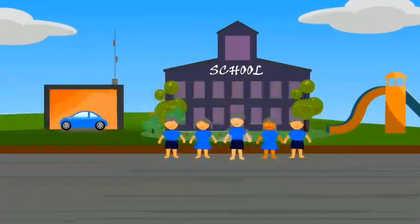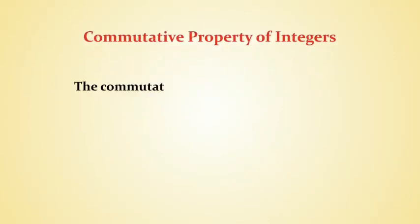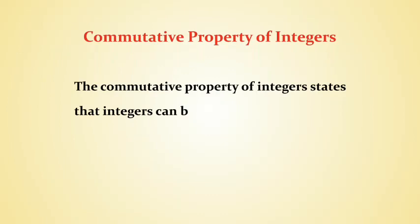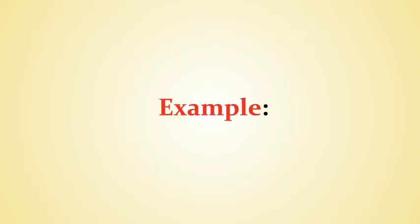Now let's understand the commutative property of integers. The commutative property of integers states that integers can be added or multiplied in any order, giving the same result each time. Let's look at an example.